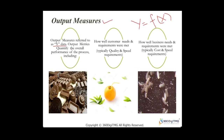Output metrics quantify the overall process — including how well the customer needs and requirements were met, typically related to quality and speed requirements, and also how well business needs and requirements were met, typically speaking about cost and speed requirements. You're considering both the customer and the business.